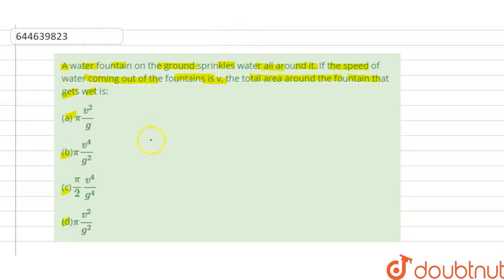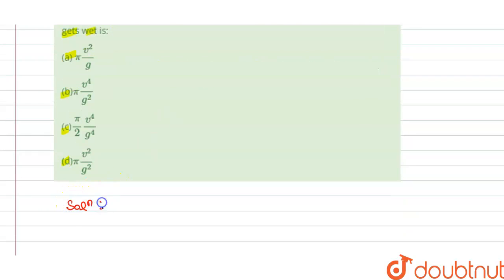So we have to find which option is correct. The solution of this question is: total area around the fountain is A, so this is equals to π R²max, that is maximum range for the radius.